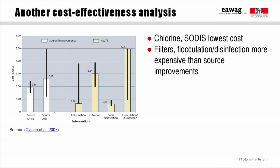Clasen found that the annual cost of implementing chlorination or SODIS was under 70 cents per year — 66 cents and 63 cents respectively — and that this cost less than source improvements, which were around $2 to $2.60 per year in Asia. Filtration and flocculation-disinfection were more expensive than the source interventions. However, it's important to recall that improved sources like these don't necessarily translate to safe drinking water at the point of consumption.